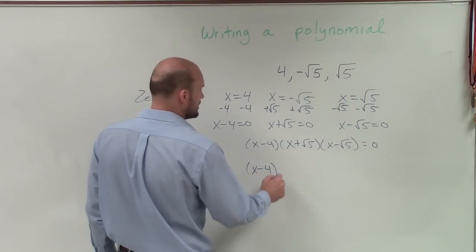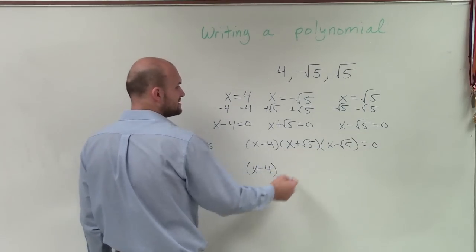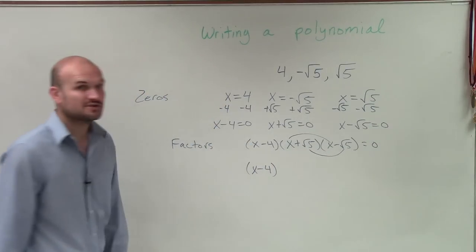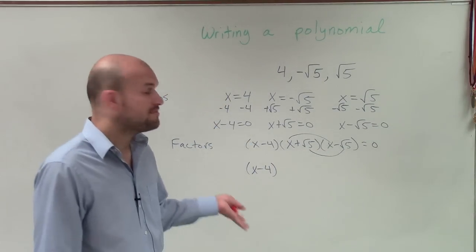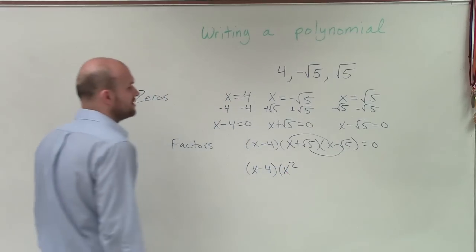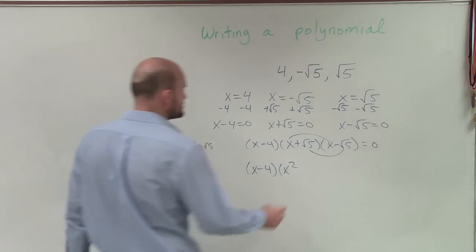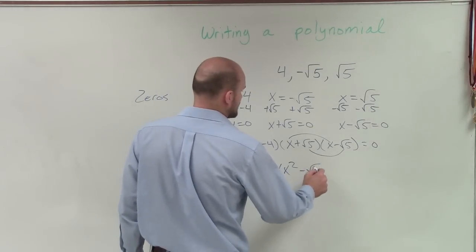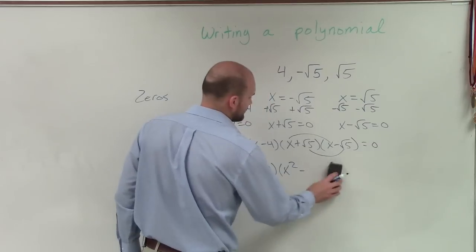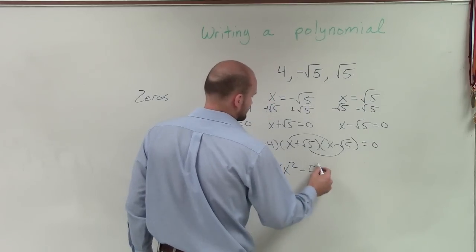So if I was going to multiply this one out first, I'll still have x minus 4. And then by multiplying this out, since this is a difference of two squares, I know I only need to multiply the first two terms and the last two terms, because my middle terms are going to add up to 0. So therefore, I'll get an x squared. And then the square root of 5 times the square root of negative 5 is going to be the negative square root of 25. Well, we know the square root of 25 is just going to be 5.